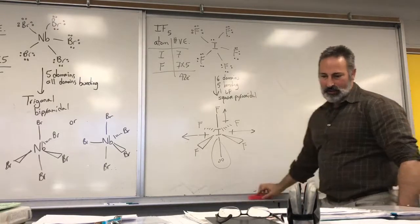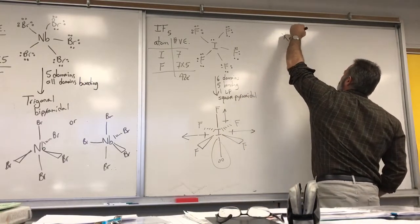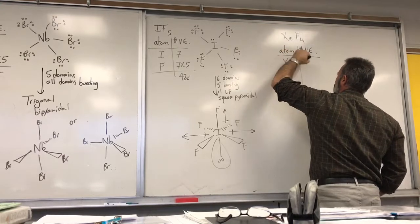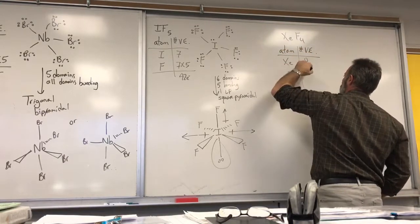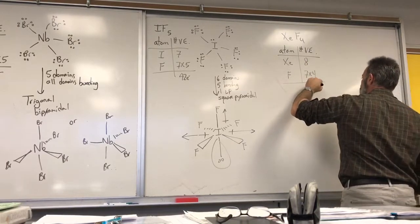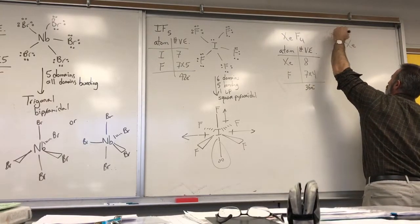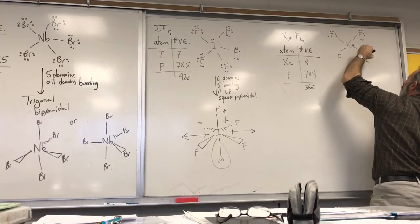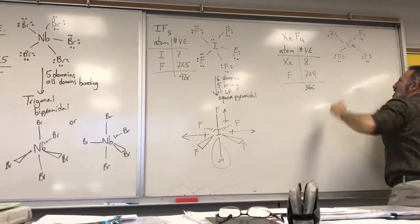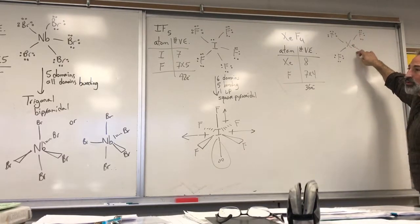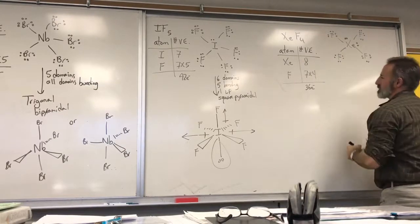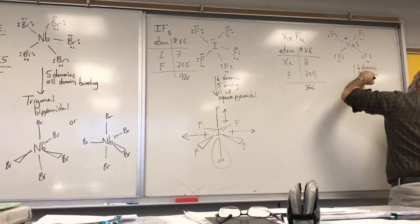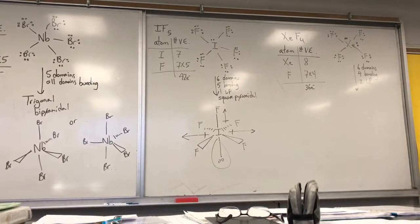The last example is xenon tetrafluoride, XeF₄. Xenon has eight electrons, fluorine has seven, and there are four fluorines, so 28 + 8 = 36 electrons to account for. Drawing four fluorine atoms attached to xenon and giving each an octet uses up all 36 electrons. That gives six domains, four of them bonding and two lone pairs, which suggests square planar.